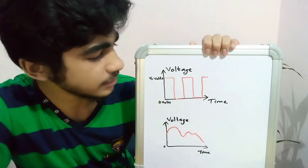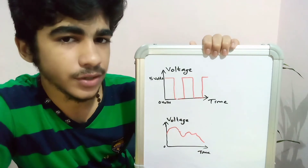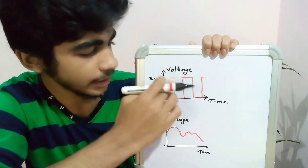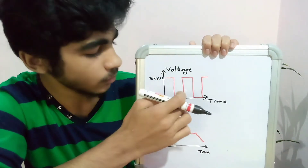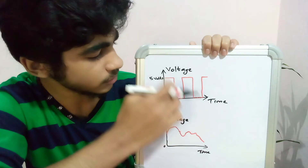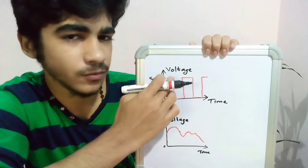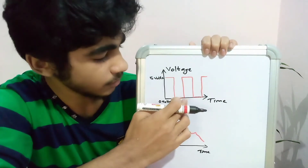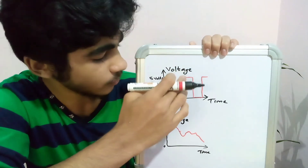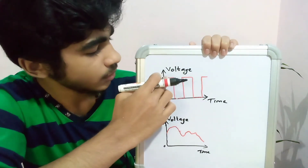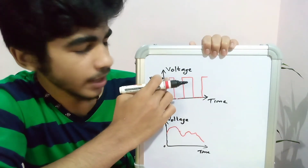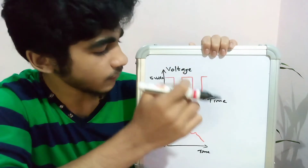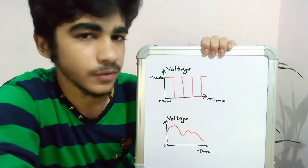So here we have a digital signal. You can see the voltage is always changing between two values: 5 volts and 0 volts. It is jumping from 5 volts directly to 0 volts and from 0 volts directly to 5 volts. So here we have 5 volts, here we have 0 volts, here we have 5 volts, here we have 0 volts.